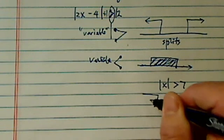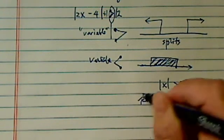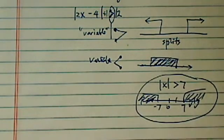Or, if it's minus 7, minus 8, minus 9, that will fit. So larger than splits, smaller than sandwich. So in our case, we have 2x minus 4 plus 1 is bigger than 12.